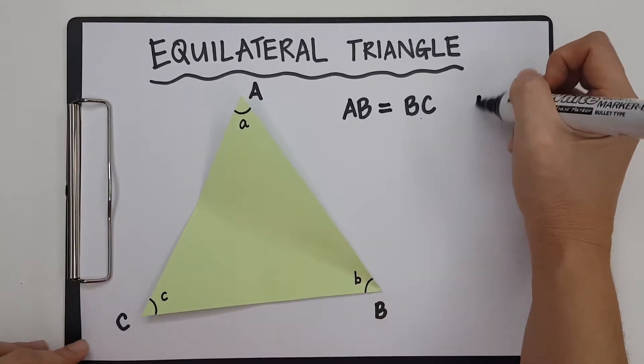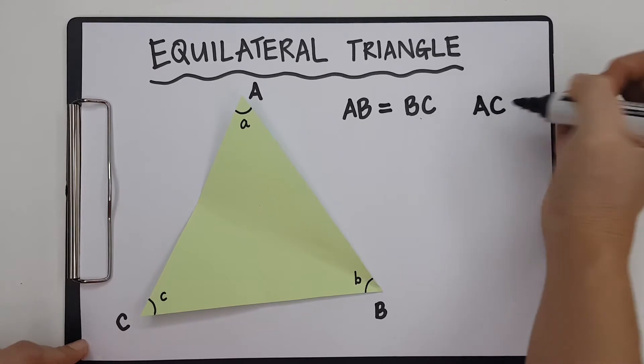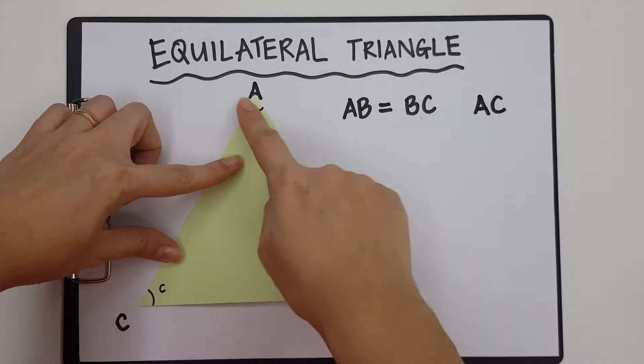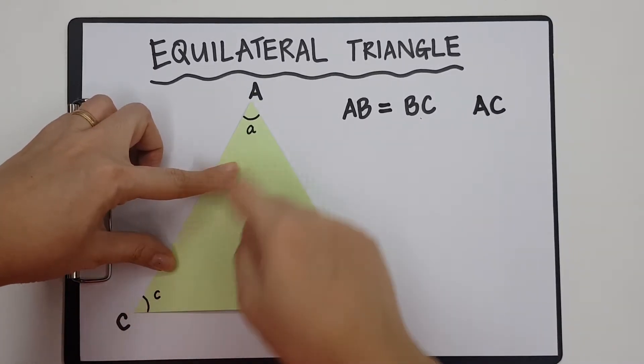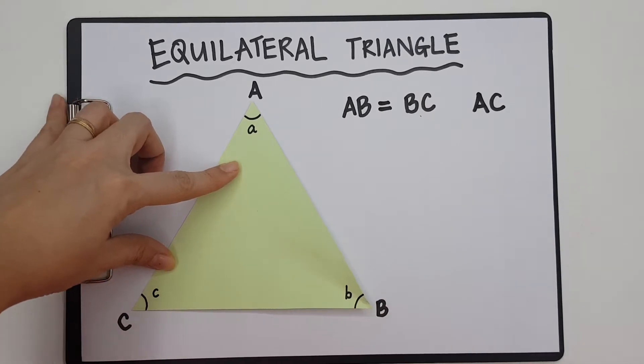BC, AC. This line can be called AC, or it can also be called CA. I've chosen AC. It really does not matter.